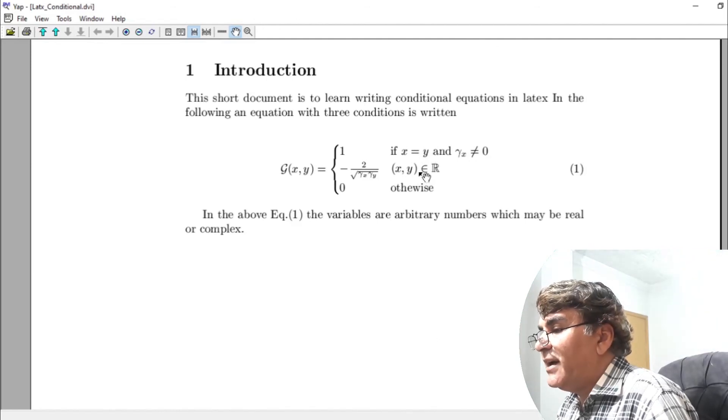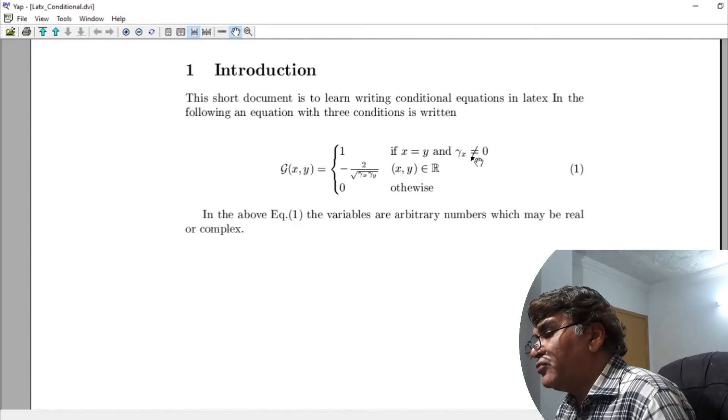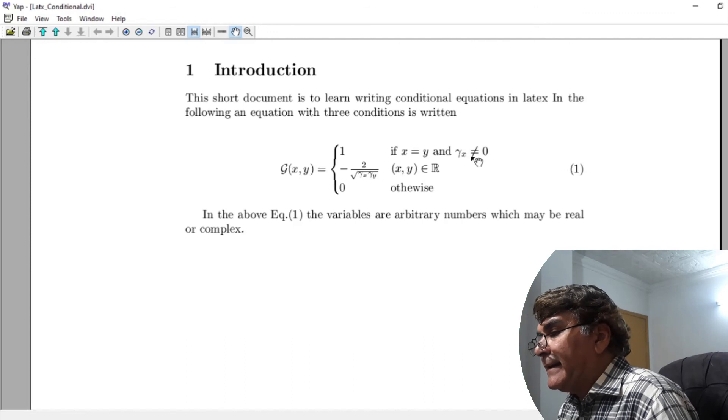This belongs to symbol is introduced by using the command backslash in and similarly the not equal to symbol was introduced by using backslash n E.